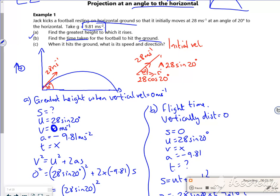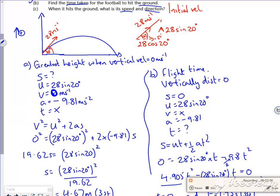So it says when it hits the ground, what's its speed and direction? Now this is a little bit sneaky. Because of the symmetry, if you think about it, it's landing at the same components, just going in the opposite direction.